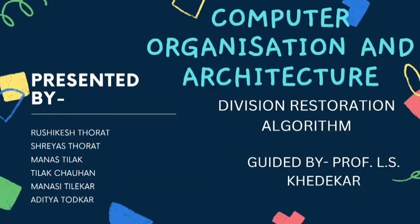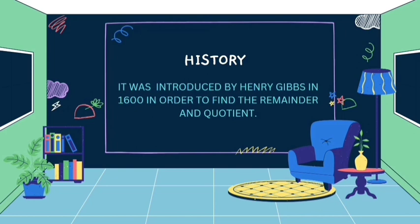Hello everyone, we are group S7 and I am Mansi. The topic we are covering in this section is Restoring Division Algorithm. Restoring Division Algorithm was introduced by Henry Gibbs in 1600 in order to find the remainder and quotient. In the division algorithm there is a quotient and a remainder. When we divide two numbers, the N-bit dividend is loaded in Q and divisor is loaded in M. The value of register A is initially kept zero, and this is the register whose value is restored during iteration, due to which it is named Restoring.